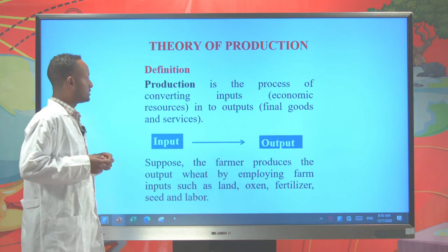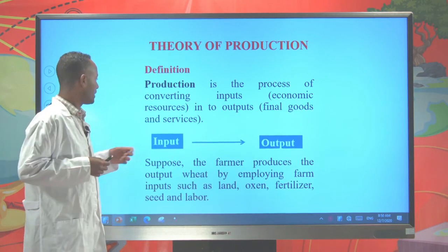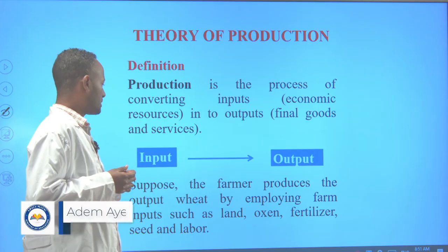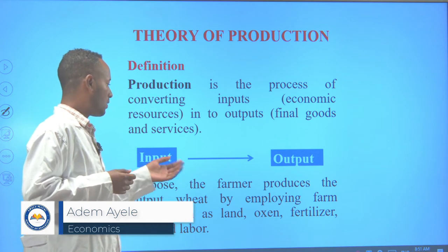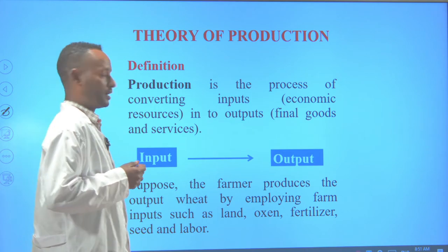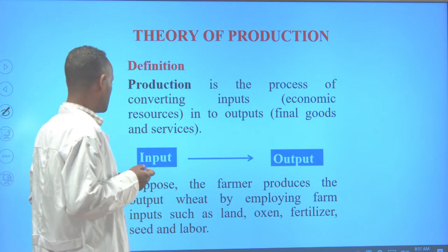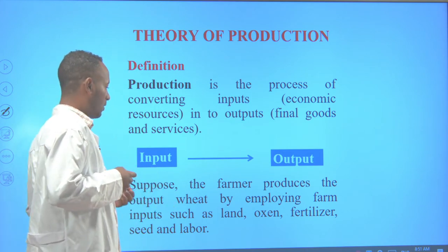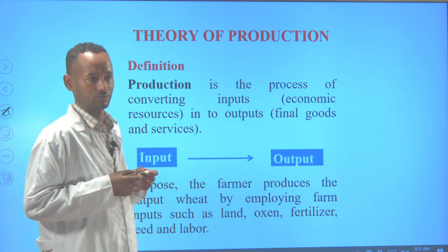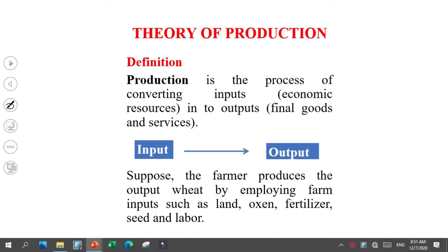Production is the process of converting inputs into outputs. It is the process of converting economic resources into more useful forms. Suppose the farmer produces the output wheat by employing farm inputs such as land, oxen, fertilizers, seed, and labor. From this example, land, labor, oxen, fertilizers and the likes are considered as inputs, while the output is the wheat.